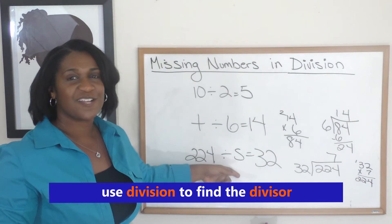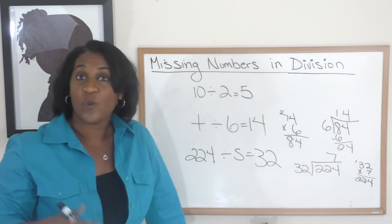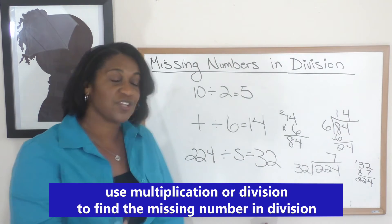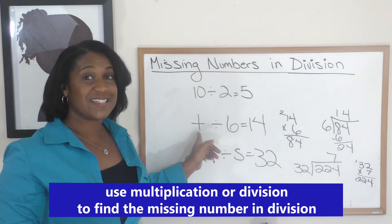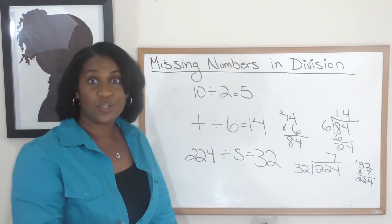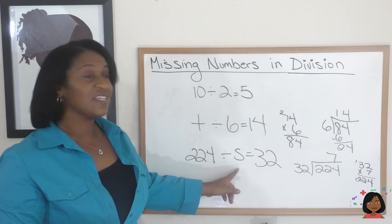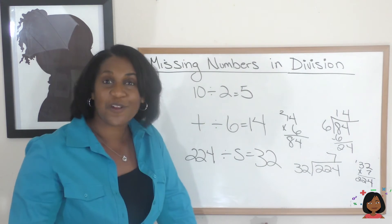So when we have a missing number in division, we can either use multiplication if that missing number is the dividend, or we can use division if that missing number is the divisor. It just depends on what you're looking for.